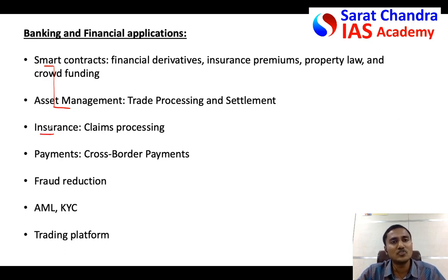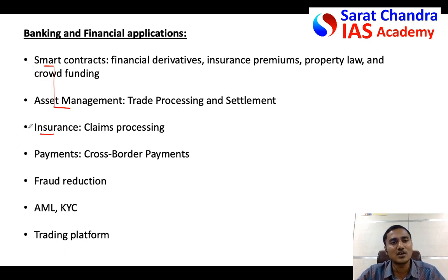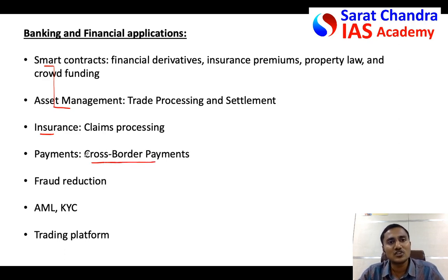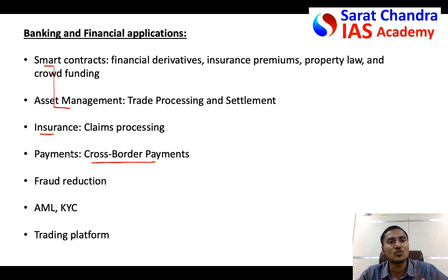Insurance frauds are common — insurance can be fraudulently claimed by several companies. To stop this, all insurance data can be managed across different parties using blockchain technology. Also, for cross-border payments and remittances, several parties are involved and data must transfer without corruption or manipulation. Blockchain technology ensures that remittance transactions remain secure and tamper-proof.